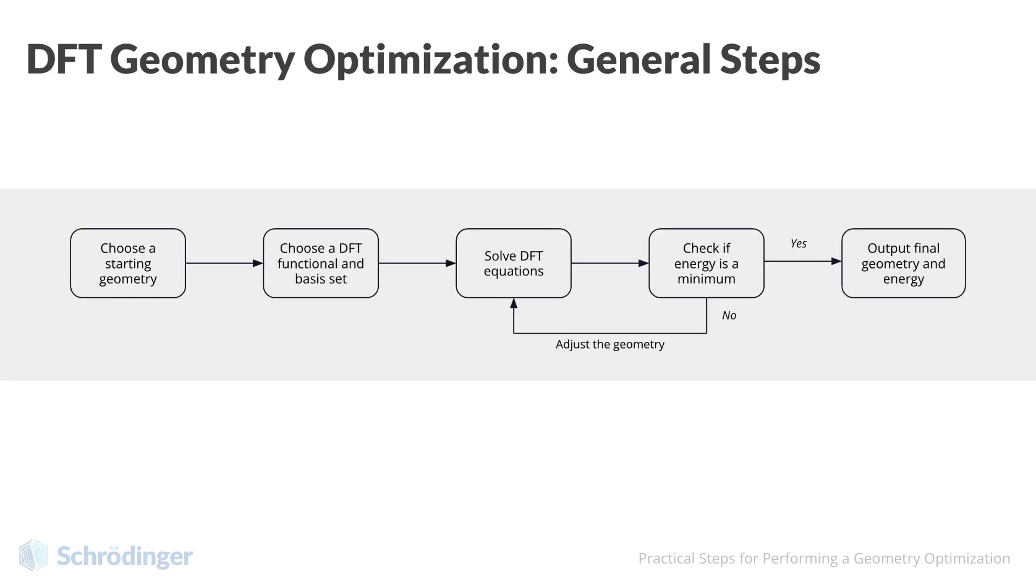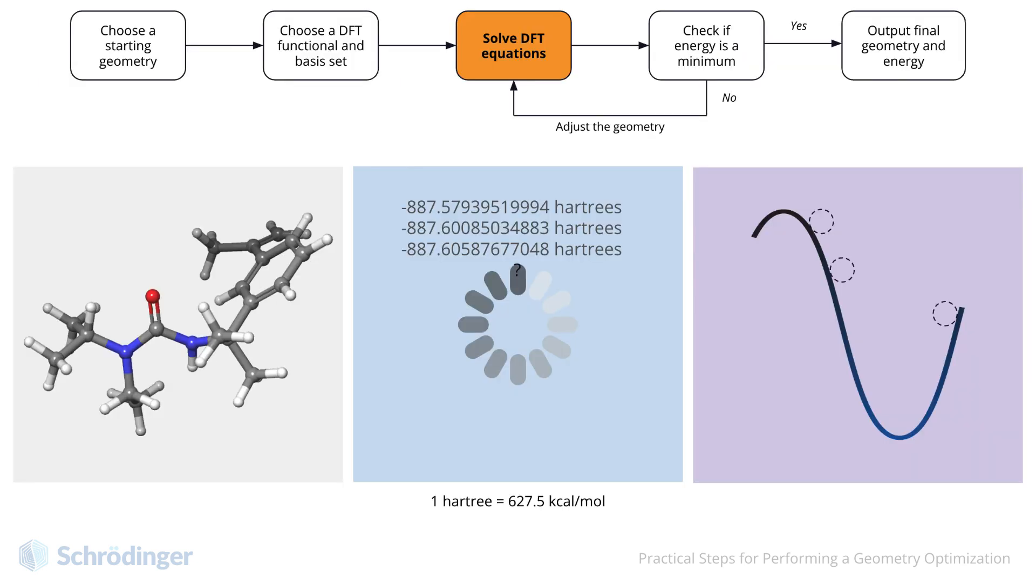Having prepared an input geometry and selected a functional and basis set, we can proceed to solve the DFT version of the Schrödinger equation. During the geometry optimization that we watched earlier, we simply showed a spinning wheel and then printed an energy value. Let's dig just a bit deeper.